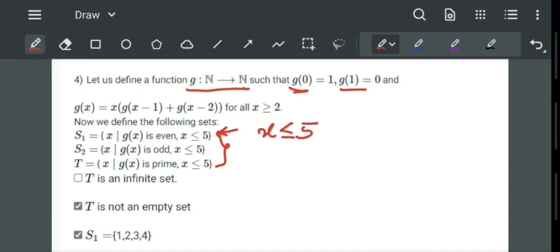So we will first find individual value of g of x, sorry, g of 0 which is given, g of 1 is also given. We will find g of 2, g of 3, g of 4, and g of 5.